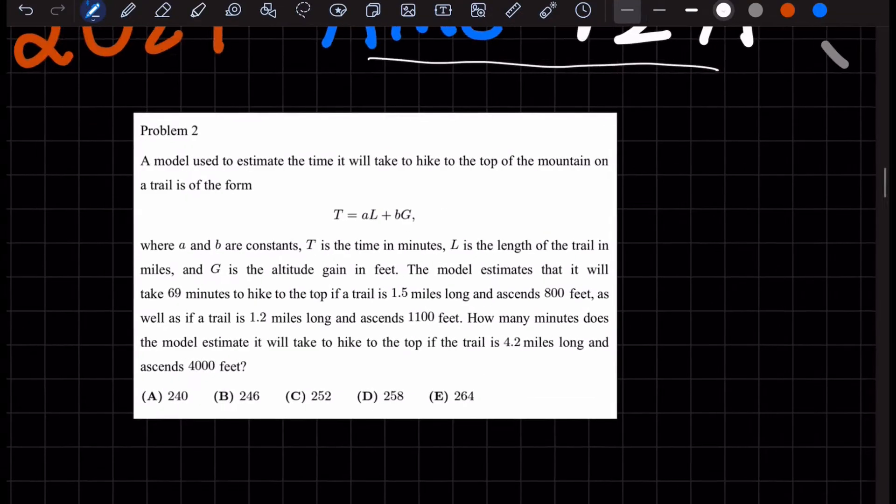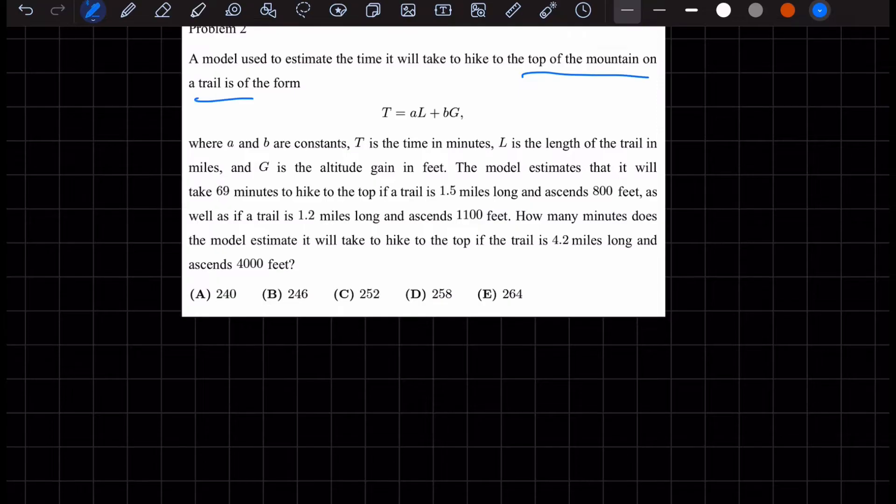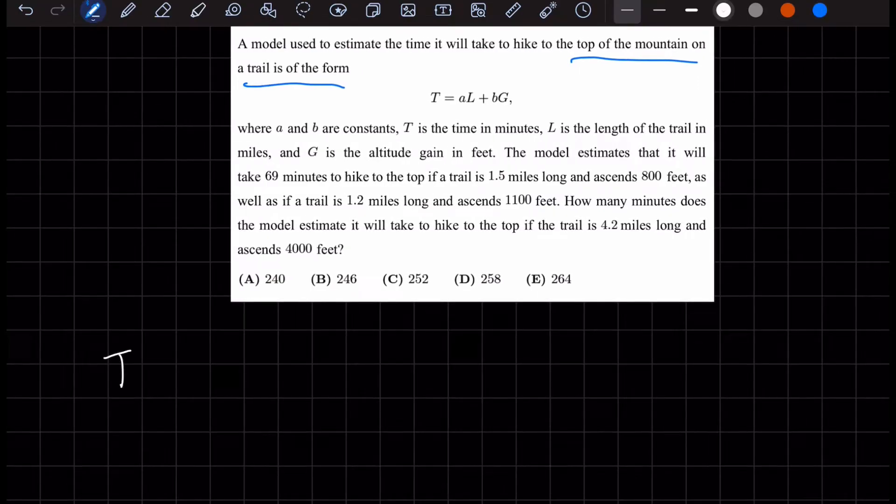And we're solving 2024 AMC 12A, problem number two. The question says, a model used to estimate the time it would take to hike to the top of the mountain of the trail is of the form T equals aL plus bG.